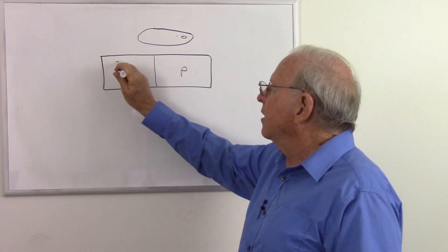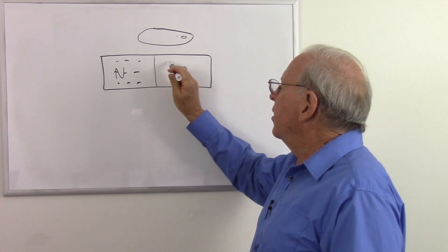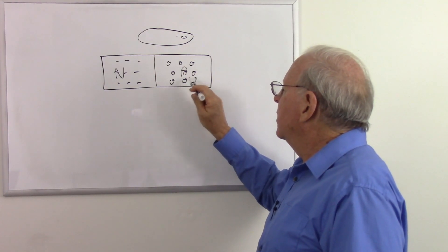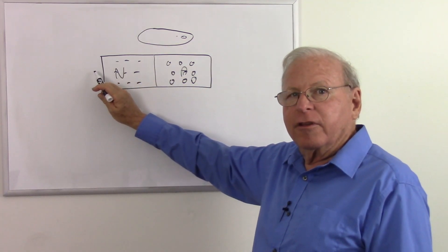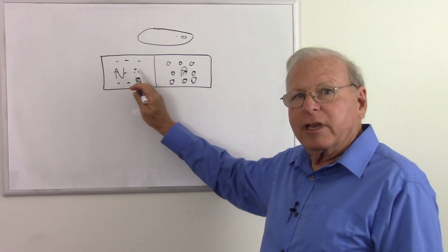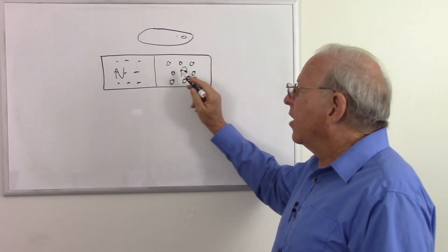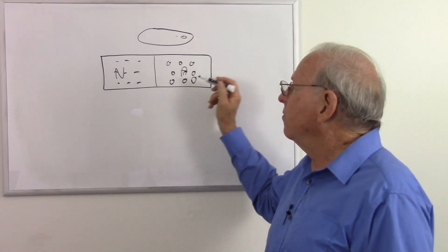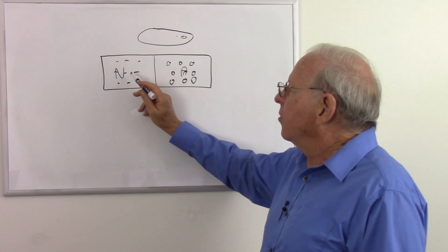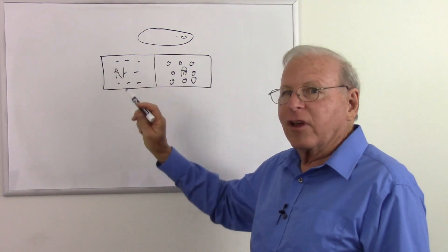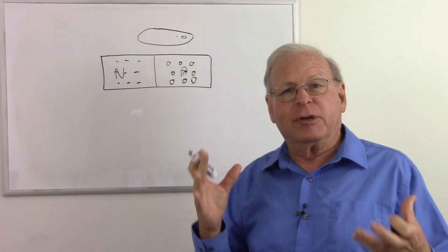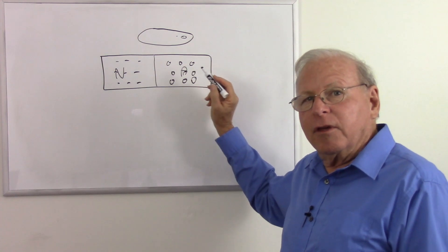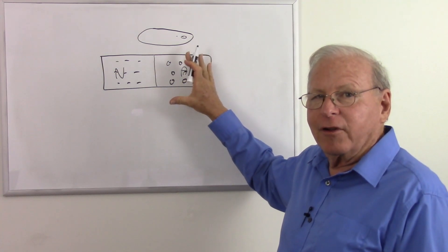So over here we have free electrons. Over here we have holes. If we just had the electrons here, this would conduct electricity, and the electrons would carry that electricity. If we had just this side, that would conduct electricity, but it's the holes that are carrying the charge, so it's a different mechanism. So we call the electrons in the n-side the majority carriers, because that's the majority of charge carriers over there. In the p-side we have holes, and those are the majority carriers because they carry the majority of the current.